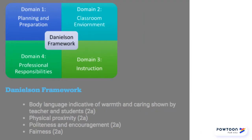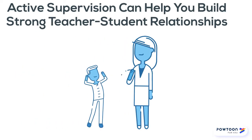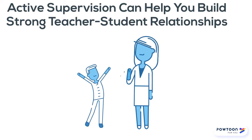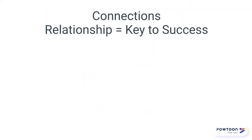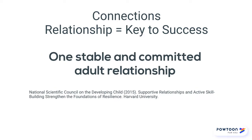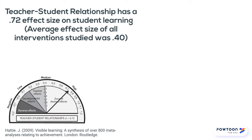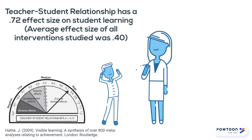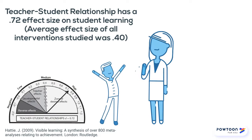When you're consciously working to use active supervision, you're fulfilling all four quadrants of Danielson, or particularly Domain 2. Consciously using active supervision can help you build strong teacher-student relationships. Research has shown that relationships are the key to academic success and that one stable and committed adult relationship can make the difference for a child. John Hattie's research has shown that teacher-student relationships have a 0.72 effect size on student learning — nearly double what is needed to prove that an intervention is successful.